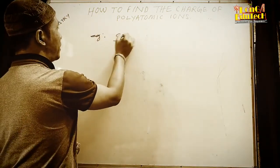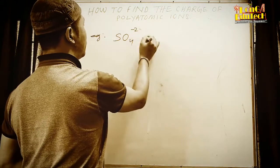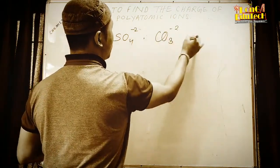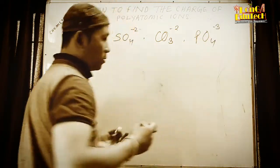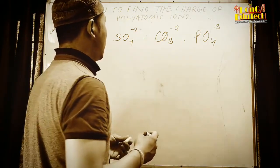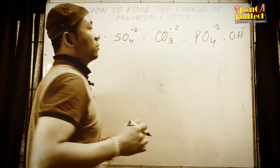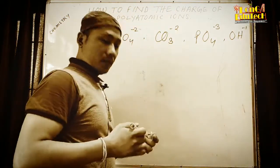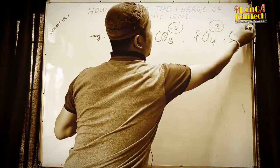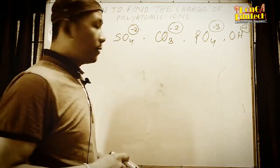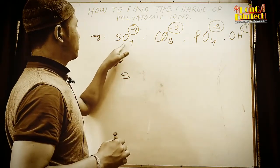Examples of polyatomic ions: sulfate has a charge of minus two, carbonate CO3 is minus two, phosphate PO4 is minus three, and hydroxide is minus one. Now let's see how we can find out these charges. For sulfate, sulfur is the central atom — there is only one sulfur and four oxygens surrounding it.